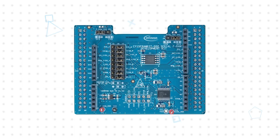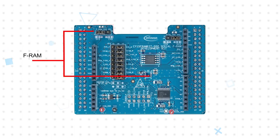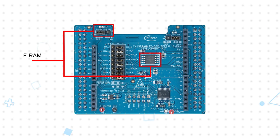Infineon Technologies' CY15 FRAM Kit 002 is designed as an easy and cost-effective way to evaluate Infineon's Excelon Serial FRAM memories, which combine reliable non-volatile data storage with the fast speed of RAM. The board features a 4-megabit Excelon Ultra Quad SPI FRAM in an SOIC package, with wide operating voltage support from 1.8 to 3.6V.